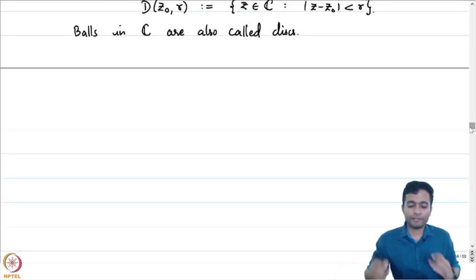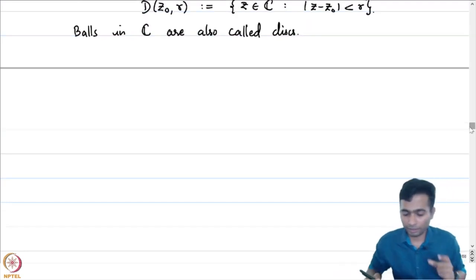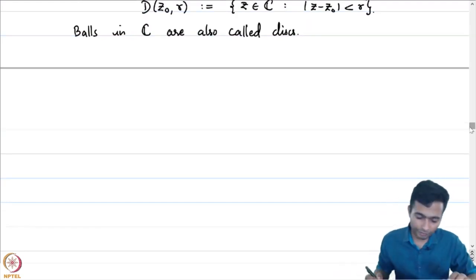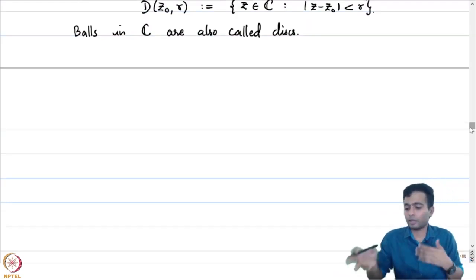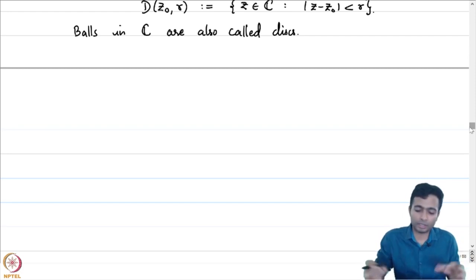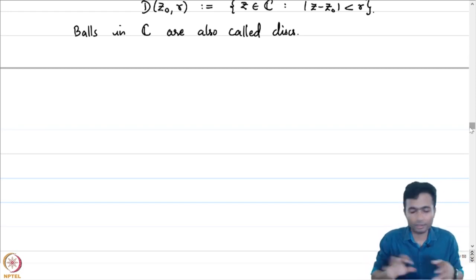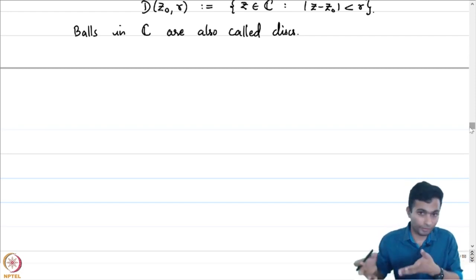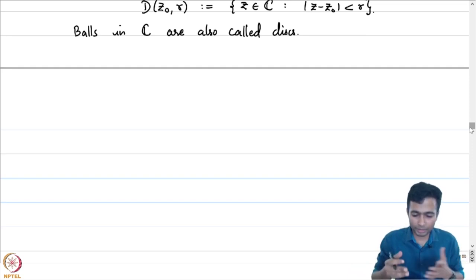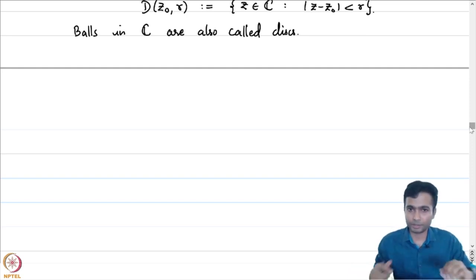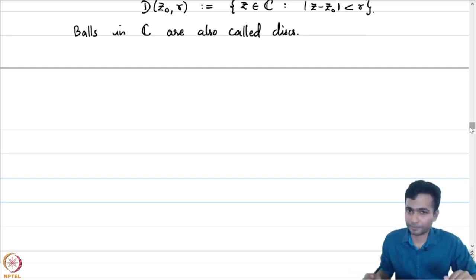That is the reason why we have used the letter D for the balls. If we are to work with a general metric space, which we will do sometimes in this lecture itself, we will use the letter B (capital B) instead of capital D — it should mean the same thing.